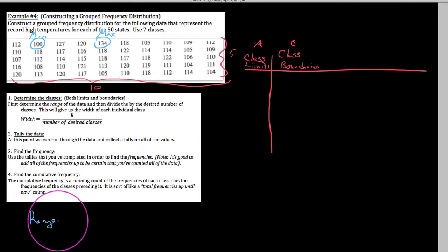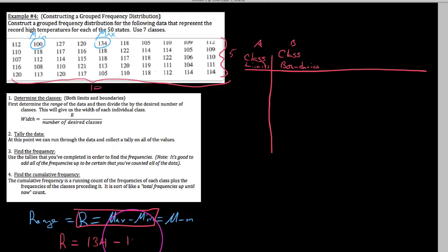We always call this the max minus the min. You'll also see it represented as capital M minus lowercase m for max and min, but essentially the range, we want to calculate this first. Since we have a range of 134 minus 100, we have a range of 34. Our data spans 34 degrees worth of temperature.